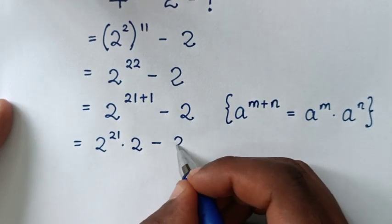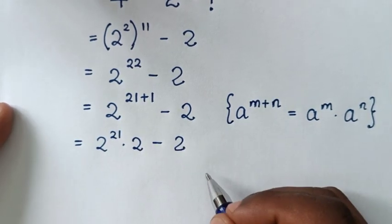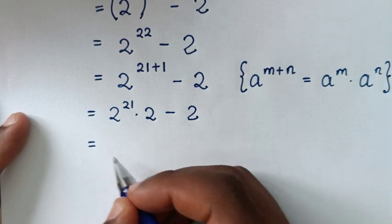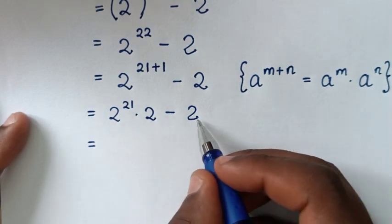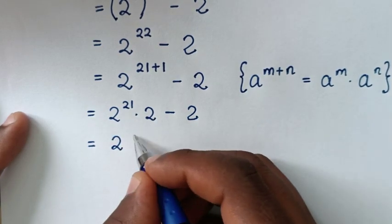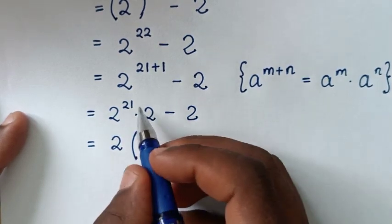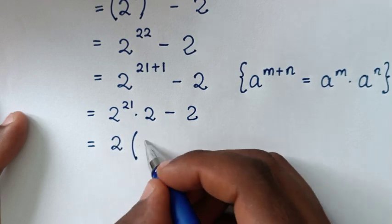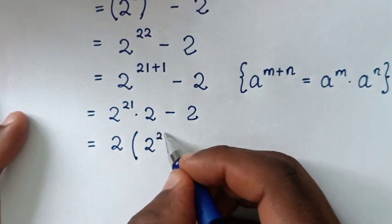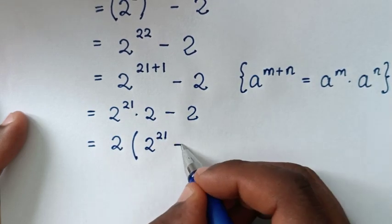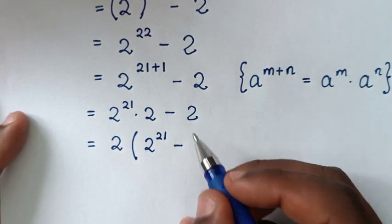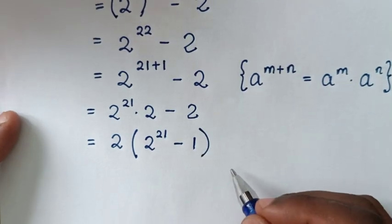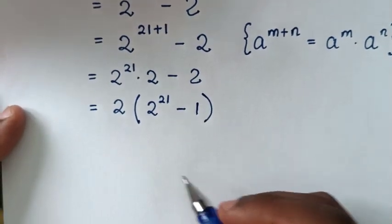In the next step, 2 is common so we will take 2 out of the bracket. Dividing by 2, it is 2 to the power of 21 minus 2 divided by 2, which is 1, inside the bracket.